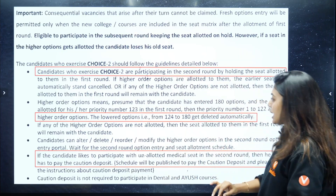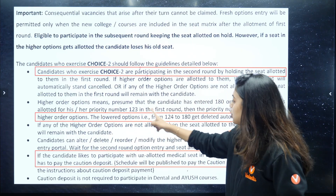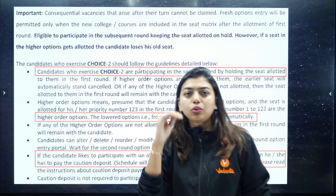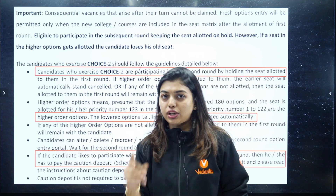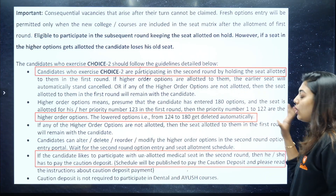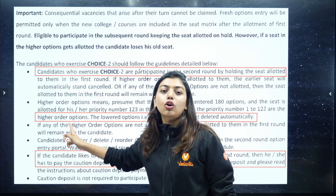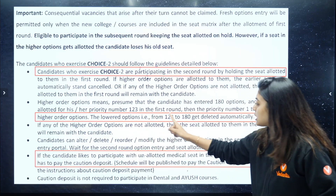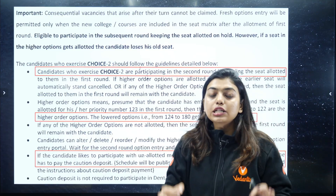What does this mean? Higher order options means: assume that candidate Gopika has entered 180 options. The seat allotted to her in the first round is the 123rd option. So automatically, options 1 to 122 become her higher order options. Options from 124 to 180 get automatically deleted — the lower order options are removed.